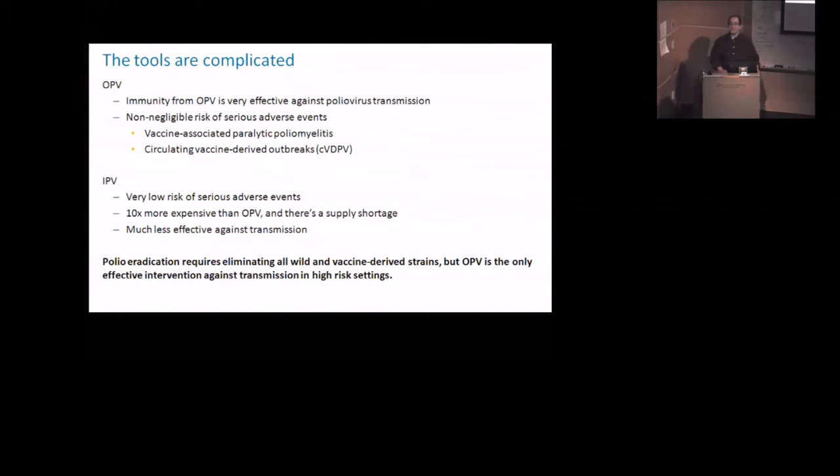So wild poliovirus, while I talked about cases of paralysis, most people don't know they're sick. It's between 1 in 200 and 1 in 2,000, depending on the serotype, of unimmunized people who get infected that actually become paralyzed. But it's so highly infectious that prior to vaccination, most people in the world got polio when they were children. And it's only because of the case-to-infection ratios being the way they are that most people didn't know that.